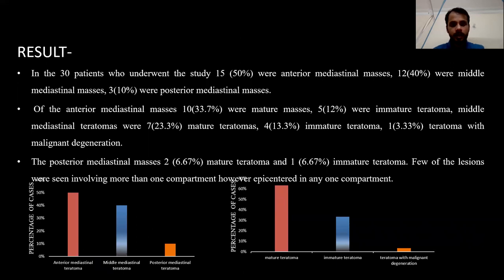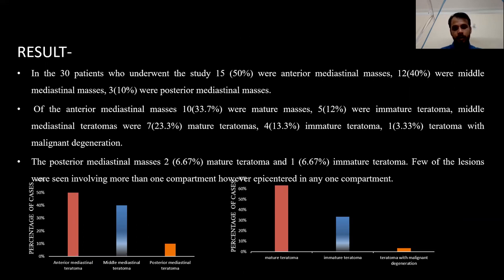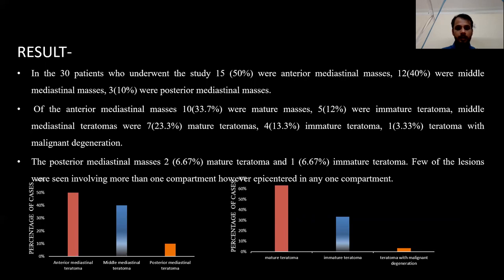In a total of 30 patients included in the study, 15 were having anterior mediastinal masses, 12 were middle mediastinal, and 3 were posterior mediastinal masses. Out of anterior mediastinal masses, 10 were mature teratomas while 5 were immature teratomas. Out of middle mediastinal cases, 7 were mature teratoma, 4 cases of immature teratoma, and 1 teratoma with malignant degeneration. Posterior mediastinal masses included 2 cases of mature teratoma and 1 immature teratoma. Few lesions involved more than one compartment but were classified based on the main compartment in which they were epicentered.